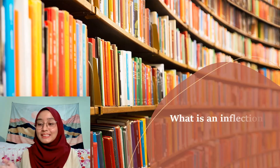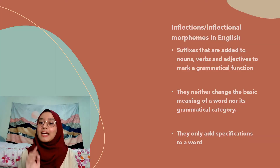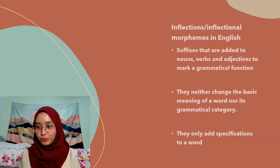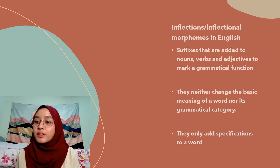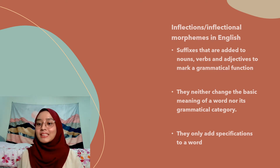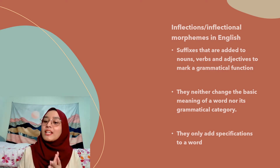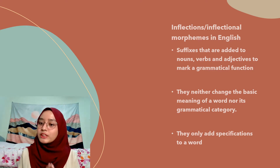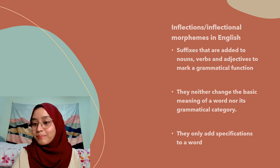First, what is inflection in the English language? Inflections, or inflectional morphemes in English, are suffixes that are added to words like nouns, verbs, and adjectives to mark a certain grammatical function. However, they do not change the basic meaning of the word or the grammatical category — for example, they do not change a noun to a verb or a verb to an adjective. They only add specifications to ensure the word is in the appropriate form and make the sentence grammatically correct.